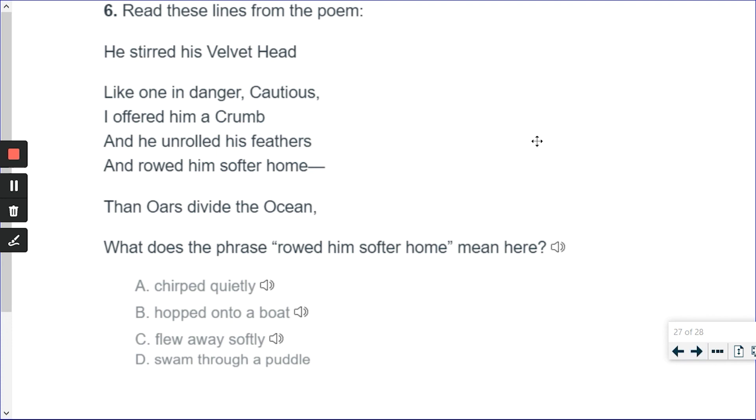Now, read these lines from the poem. He stirred his velvet head. Like one in danger, cautious, I offered him a crumb. And he unrolled his feathers and rowed him softer home. Then oars divide the ocean. What does the phrase, rowed him safer home, mean?